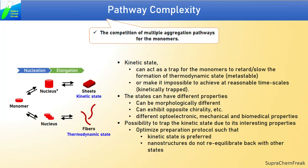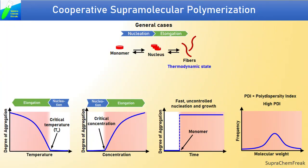For this, preparation protocols can be optimized such that the kinetic state is preferred and nanostructures do not re-equilibrate back to other states with lower energy. In the previous video on supramolecular mechanism, we discussed the cooperative supramolecular polymerization where monomers undergo a non-spontaneous nucleation and spontaneous elongation process. The process is marked by critical temperature and concentration. In general, the overall process is spontaneous and hence a fast uncontrolled nucleation and growth process is observed with no time-dependent kinetics, resulting in high polydispersity index.